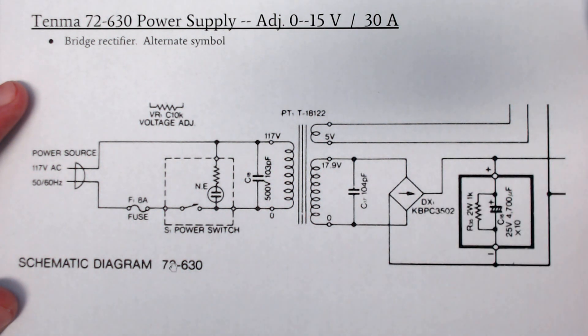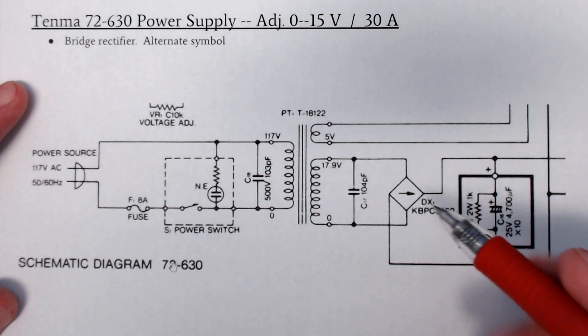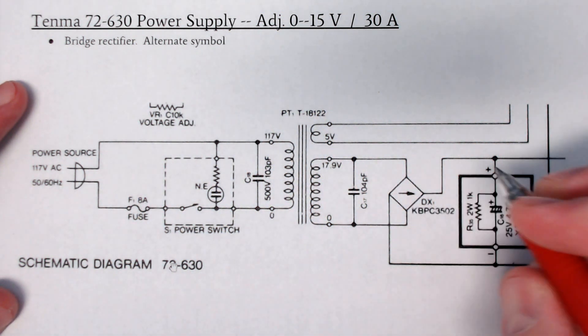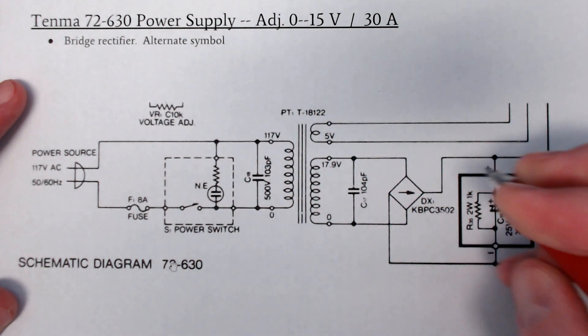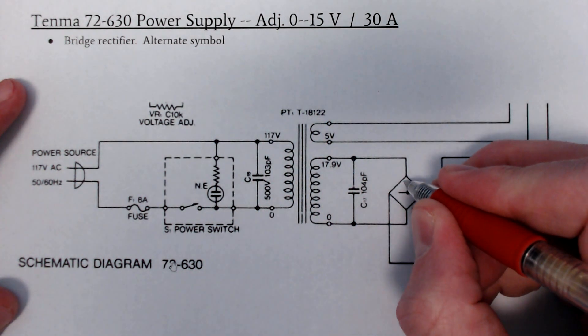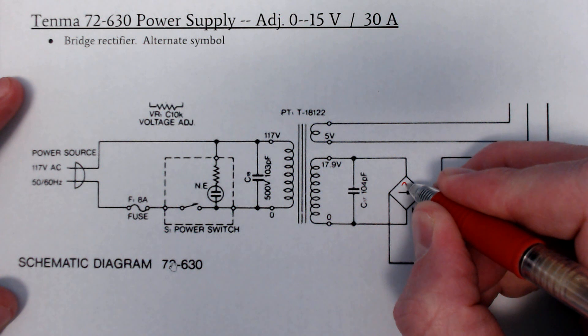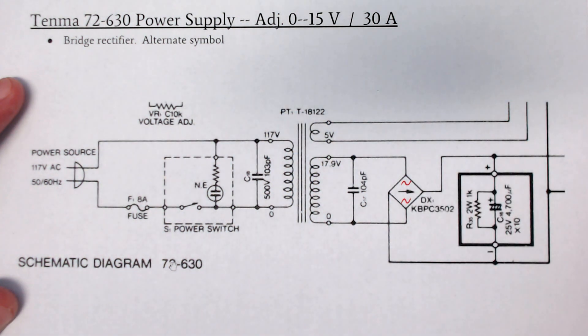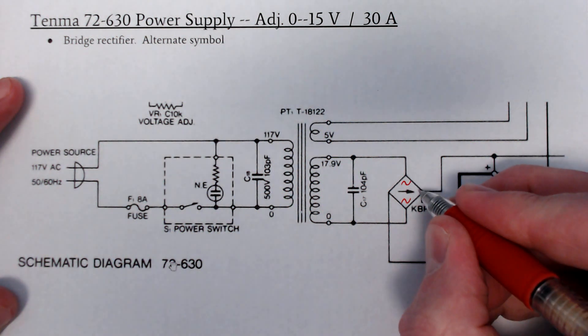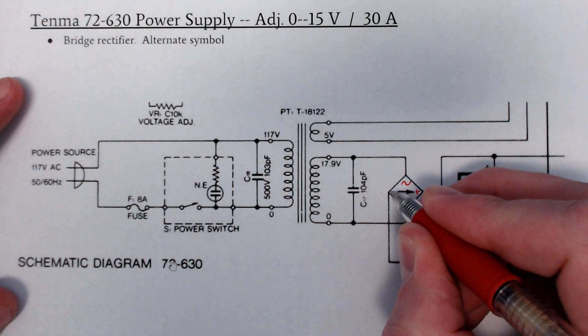This is our diode symbol or our bridge rectifier symbol. You can look up a data sheet for this. This is another old rectifier. But you might have labels on this bridge rectifier that look like this. We'll have a waveform here, a sine wave here, and then also it'll have a plus on this side and a minus on that side.